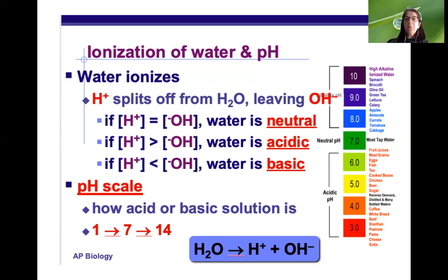On the right you will see the pH scale and common substances and their pHs. Eggs, fish, tea, chicken, beer, and sugar are all slightly acidic. Coffee is very acidic. Whereas tomatoes, cabbage, carrots, almonds, and apples are a little bit on the basic side.